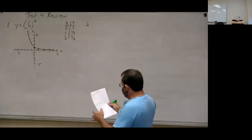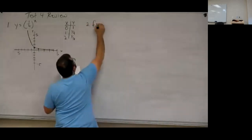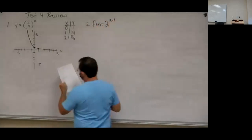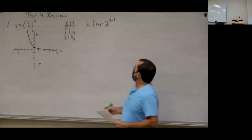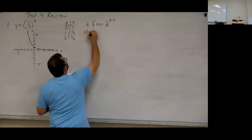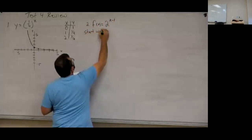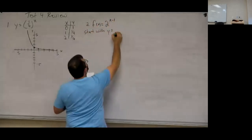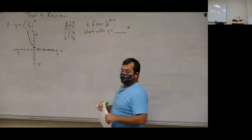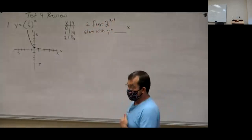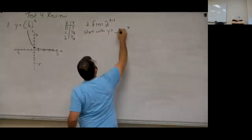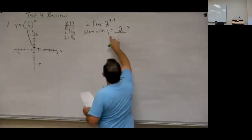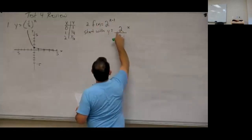Number two starts dealing with moves on the graph. We have f(x) equals 10 to the x minus 1. We're going to identify what graph we're starting with. I'll start with y equals 2 to the x — you just put the base in the blank. The base of my problem is 2, so I put my 2 in that blank.